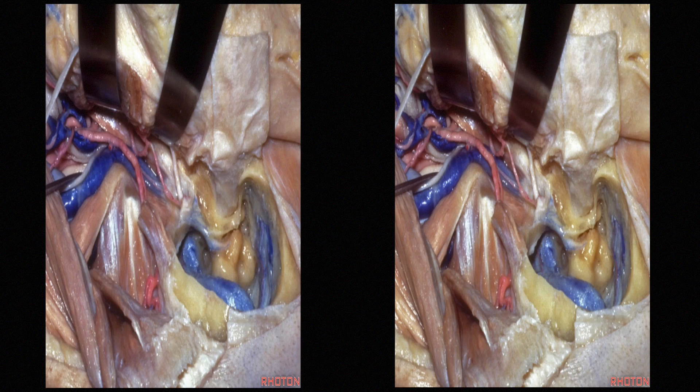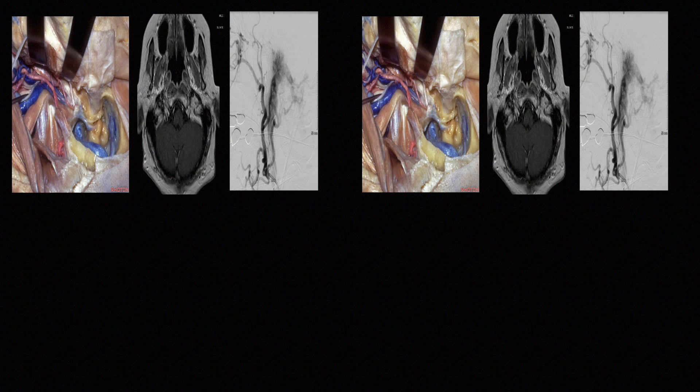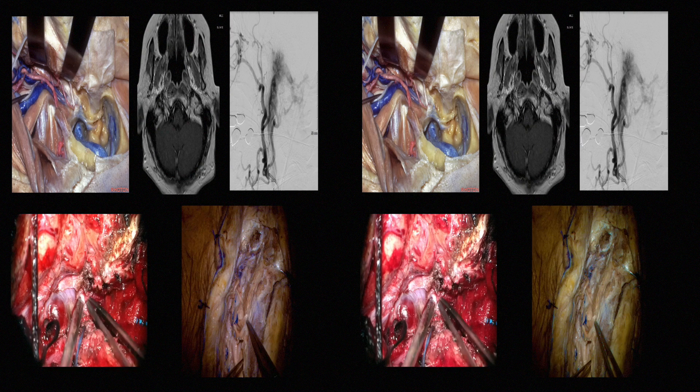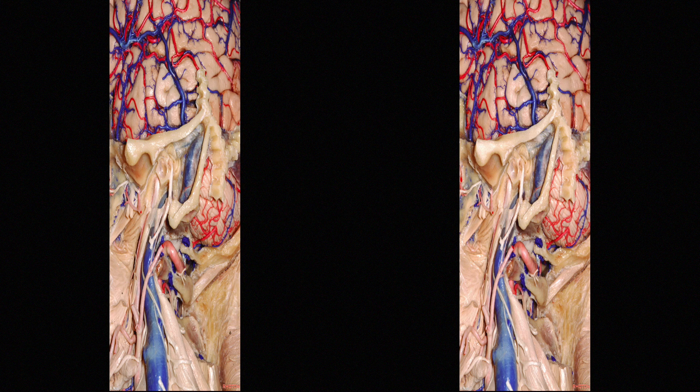This presentation illustrates the approach to the jugular foramen surgically, and includes a case presentation of a left glomus jugulare tumor with surgical footage of the case itself, as well as a cadaver dissection demonstrating specific anatomical landmarks and the approach to the jugular foramen region.